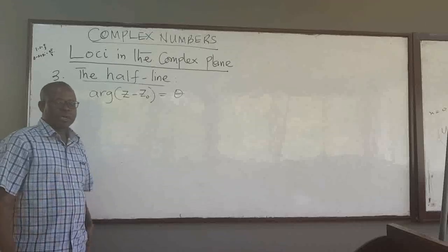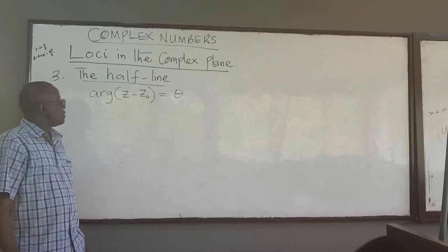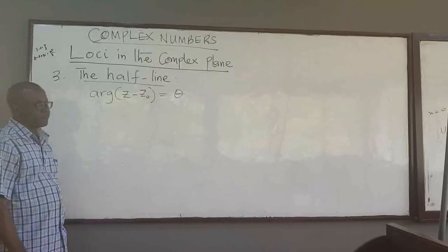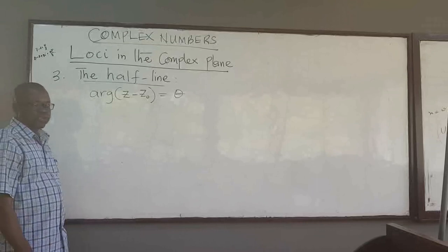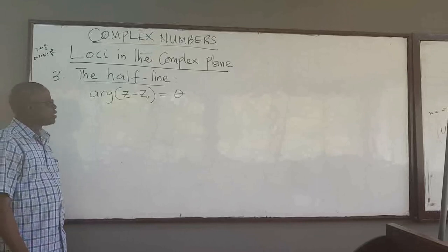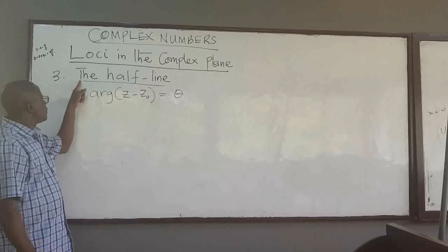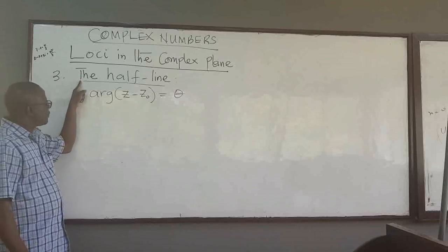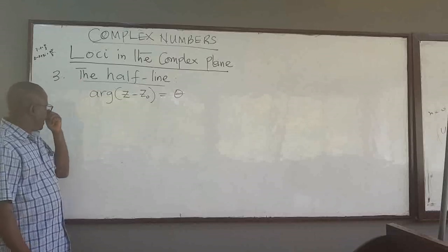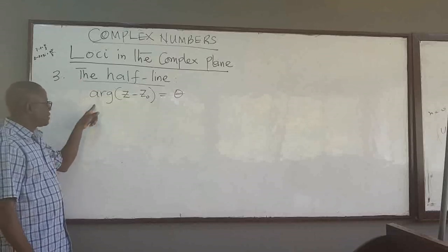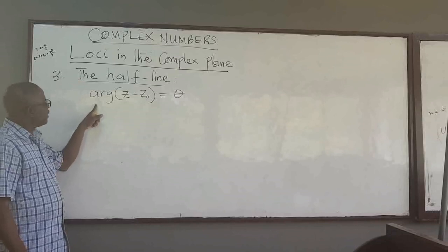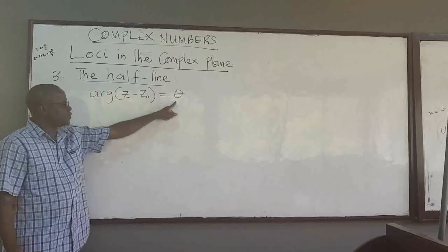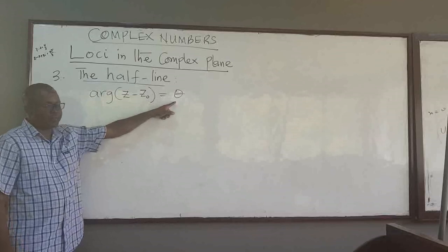Welcome to our last part one on the locus of points. We want to look at the so-called half line. The half line is described by this equation: the argument of z minus z naught is equal to theta.